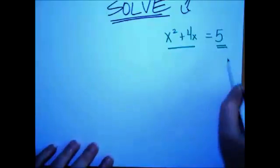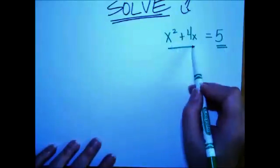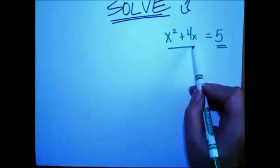So we do have a number term on the right here. But this x squared plus 4x does not appear to be a perfect square, does it? Well, let's see what we can do about that.